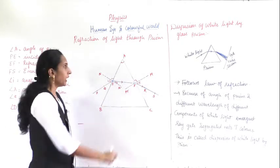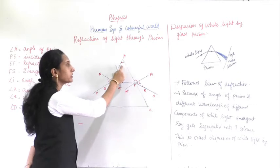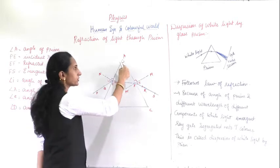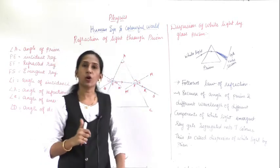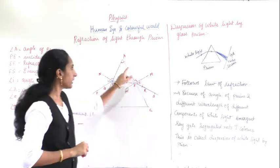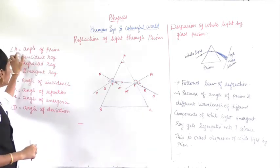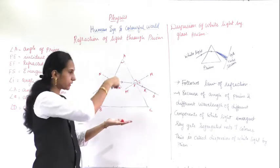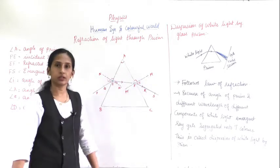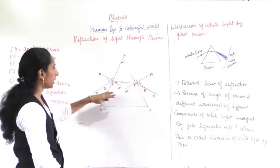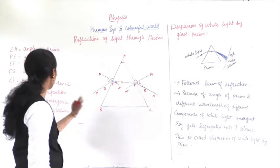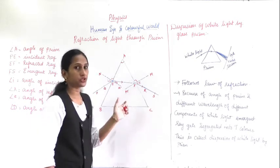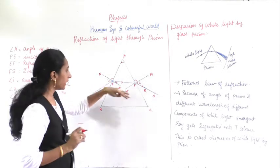The most important thing is angle A — the topmost angle of the prism. This angle is always called the angle of prism. When you keep a prism, the topmost angle is always called the angle of prism. Now we are going to study the angle of deviation — how much the ray is deviated, and that angle is the angle of deviation.